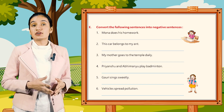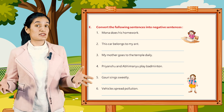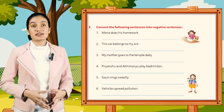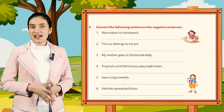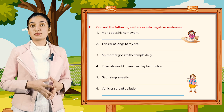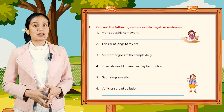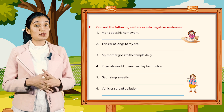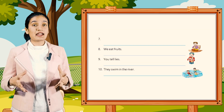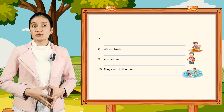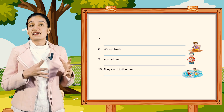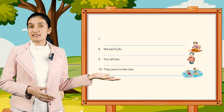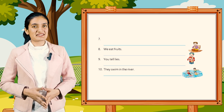Now Part E: convert the following sentences into negative sentences. First, Mona does her homework. This car belongs to my aunts. My mother goes to the temple daily. Vyanshu and Abhimanyu play badminton. Gauri sings sweetly. Vehicles spread pollution. Rohini writes neatly. We eat fruits. You tell lies. They swim in the river. So kids, you have to convert these sentences into negative sentences.